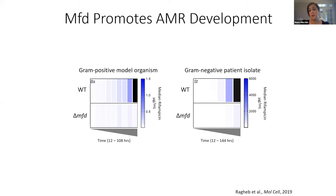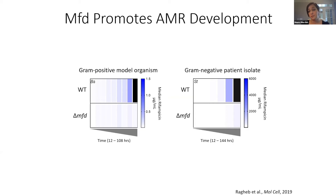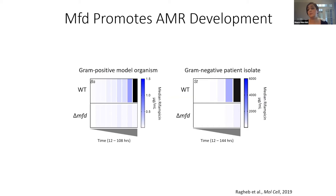I'm showing heat maps representing the amount of rifampicin that cells can tolerate over time, over many generations. As the colors get more intense and more blue, that means they can tolerate more; when it's black, we have to stop the experiment because we can't add any more rifampicin into the media. On the left is Bacillus subtilis, the gram-positive model organism; on the right is Salmonella typhimurium from a patient isolate. Regardless of whether it's gram-positive or gram-negative, MFD seems to actually promote the development of AMR, at least in these experiments.